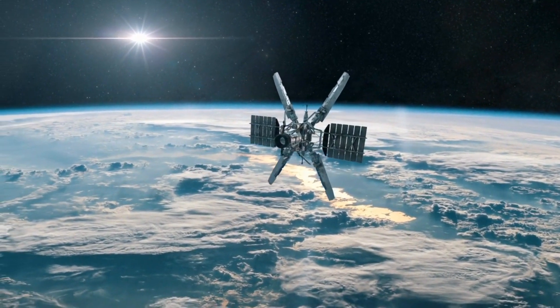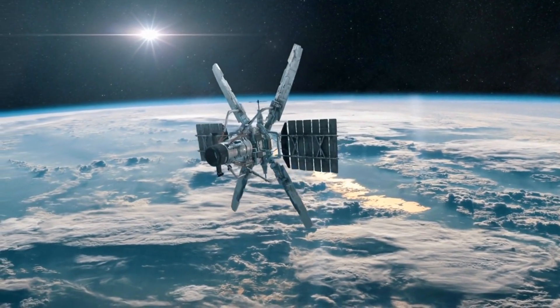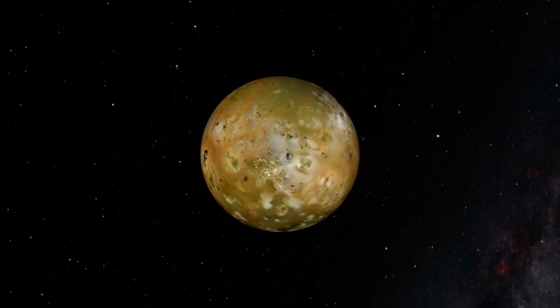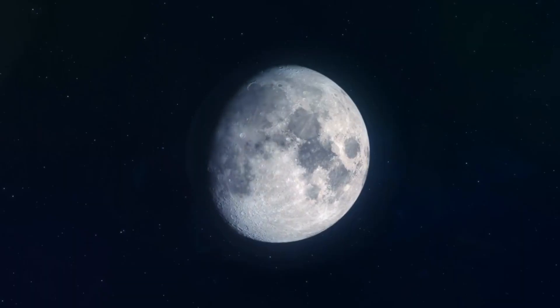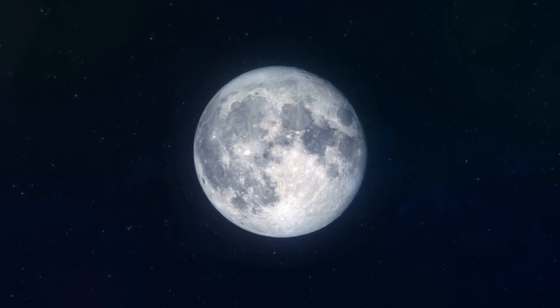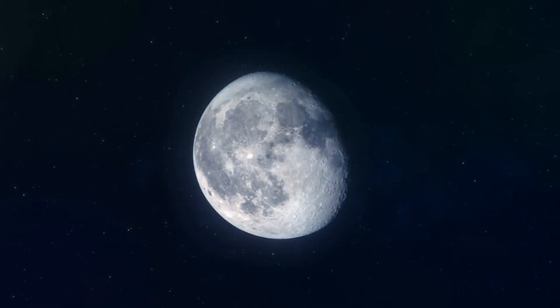Some dwarf planets and asteroids have their own natural satellites. The dwarf planet Pluto, for instance, has five known moons, including Charon, which is around half the size of Pluto, while the asteroid 130 Electra has three minor moons circling it.